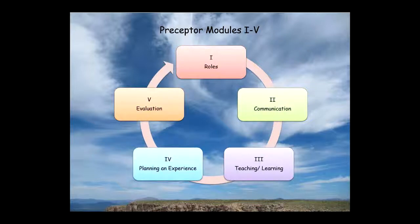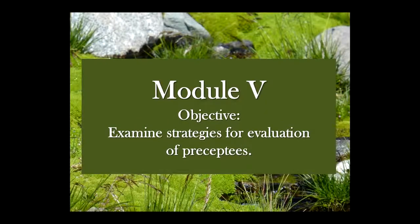This module focuses on evaluation — the final piece of the puzzle — and links with all four previous modules: roles and relationships in Module 1, communication in Module 2, learning styles and teaching strategies in Module 3, and planning the precepting experience in Module 4. The objective for Module 5 is to examine strategies for evaluation of precepting.